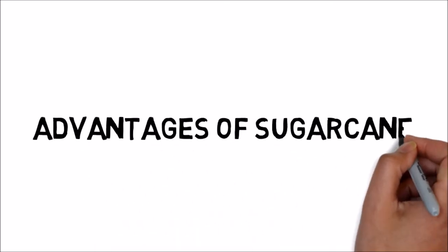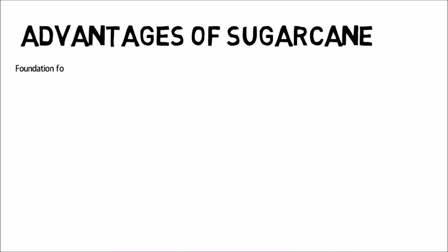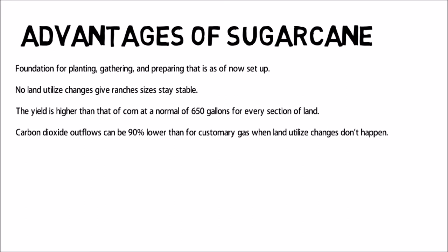The advantages of sugar cane include: infrastructure for planting, gathering, and preparing that is as of now set up. No land utilized changes give ranches sizes stay stable. The yield is higher than that of corn at a normal of 650 gallons for every section of land. Carbon dioxide outflows can be 90% lower than for customary gas when land utilized changes don't happen.